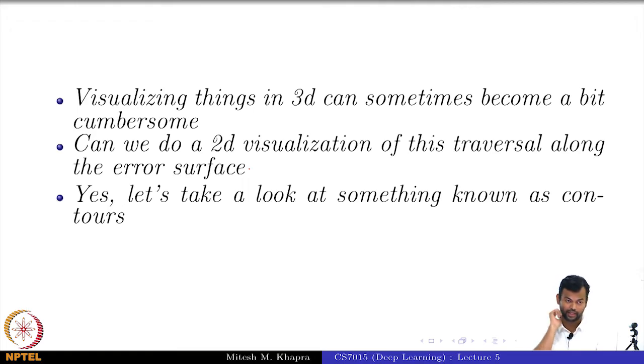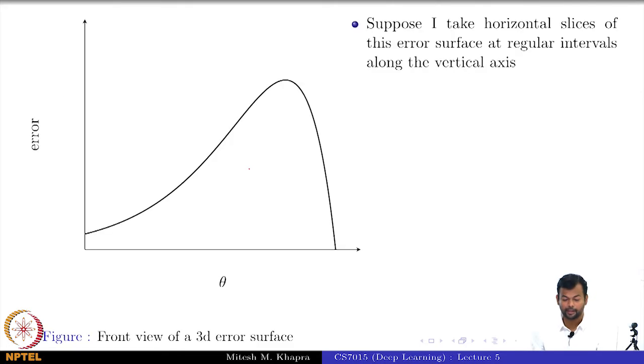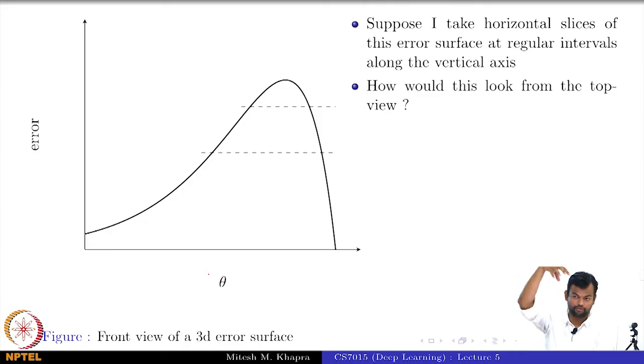How many of you have looked at contour diagrams before? How many of you know how to read them? Okay, all of you know how to read them. So let's suppose this is what my error surface looks like and I have a single scalar variable. So this is just a function of w, for example, and this is what my error surface looks like. Now, what I'm going to do is I'm going to take horizontal slices on this error surface. Now, can you tell me how this is going to look from the top?